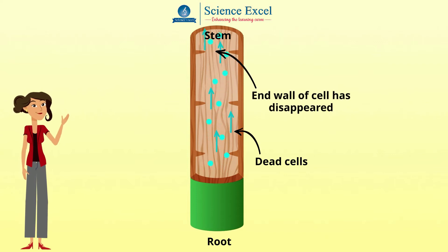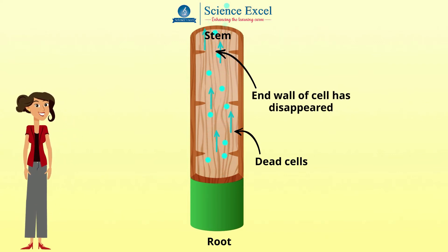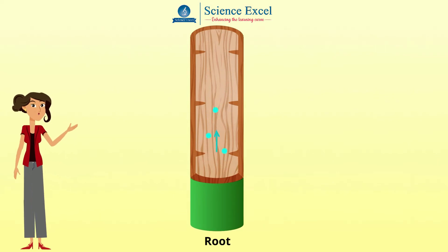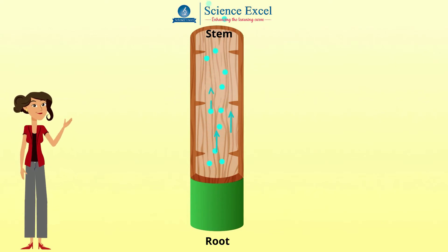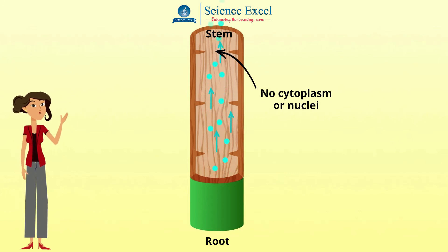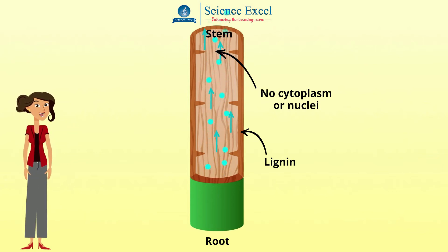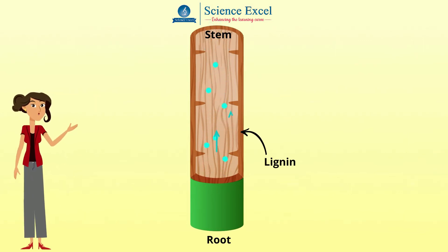The end walls of the cells have disappeared so a long open tube is formed. Xylem vessels run from the roots of the plant right up through the stem, branching out into every leaf. Xylem vessels contain no cytoplasm or nuclei. Their walls are made up of cellulose and lignin, a woody material. This lignin is very strong which helps the xylem vessels to keep the plants upright.